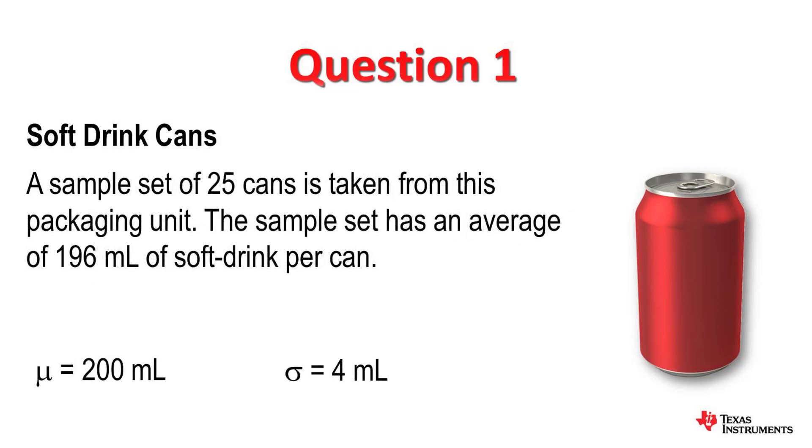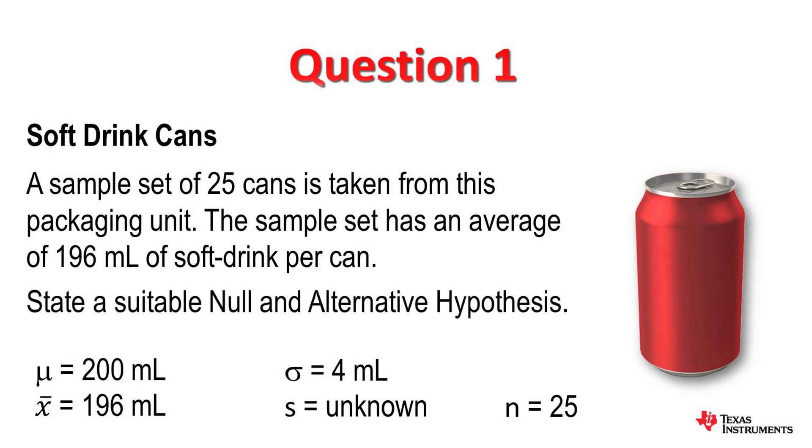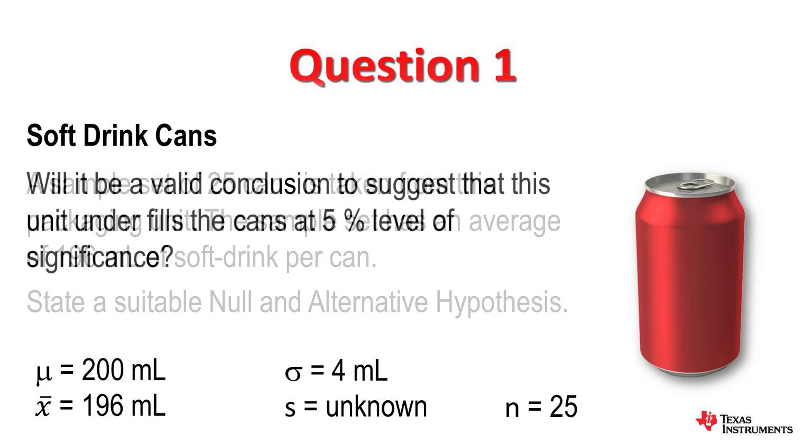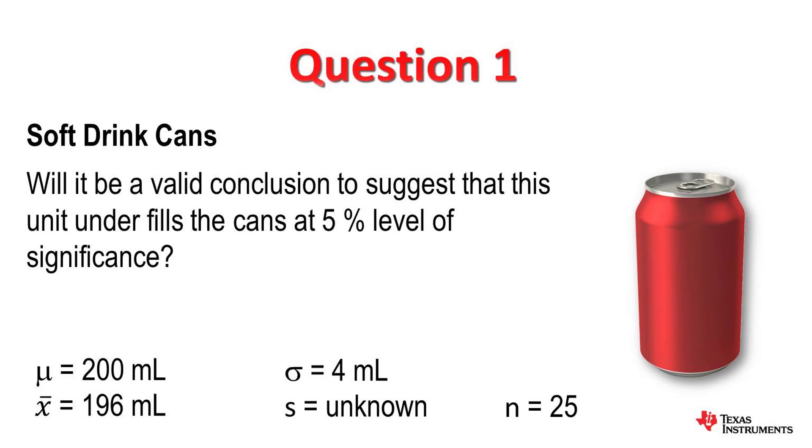A sample set of 25 cans is taken from this packaging unit and their average is found to be 196 milliliters of soft drink per can. State the null and alternative hypothesis in this case, and will it be a valid conclusion to suggest that this unit actually underfills the cans?